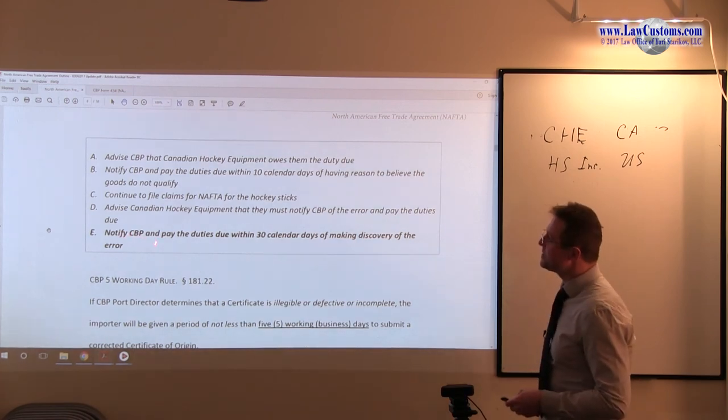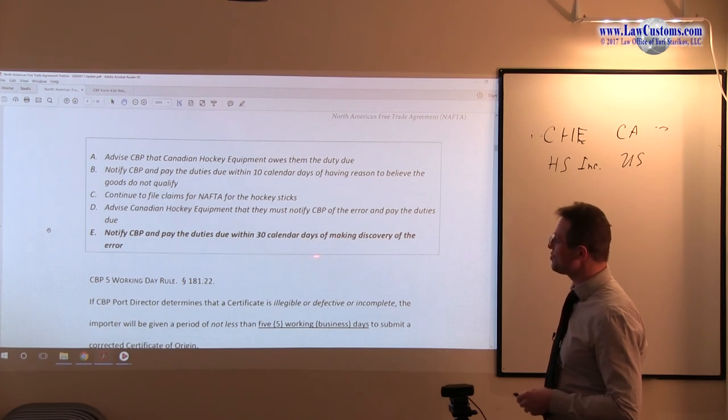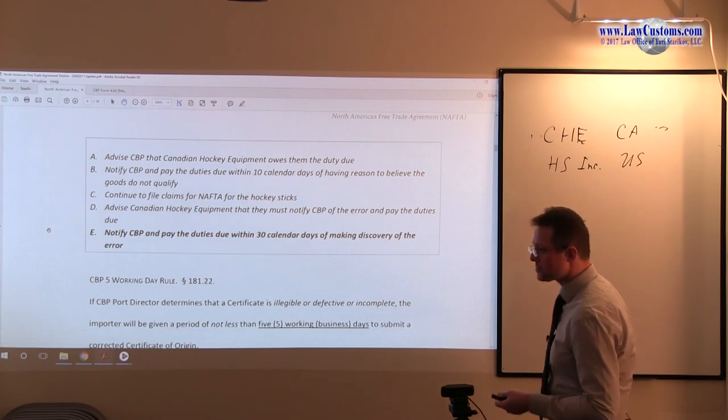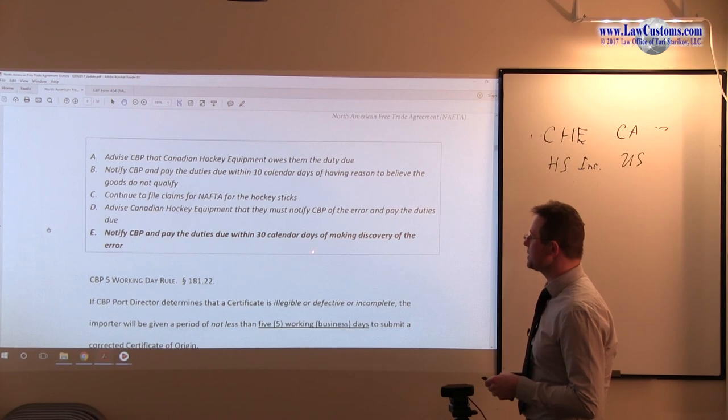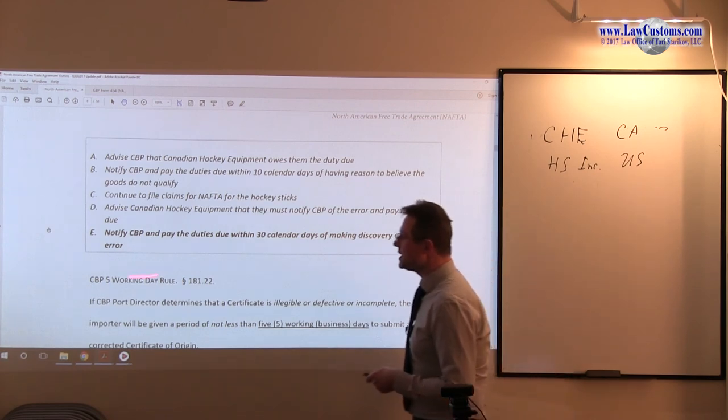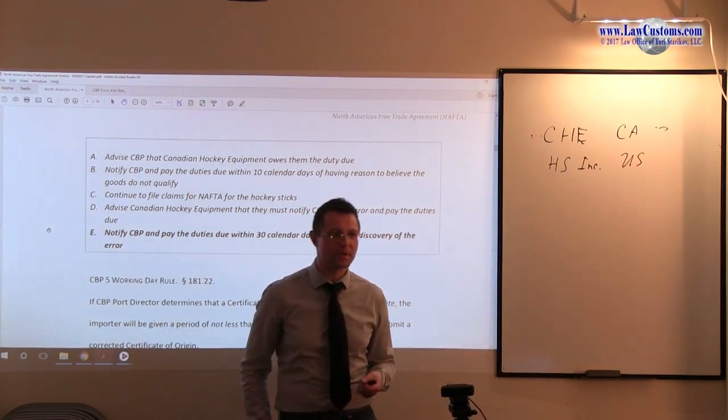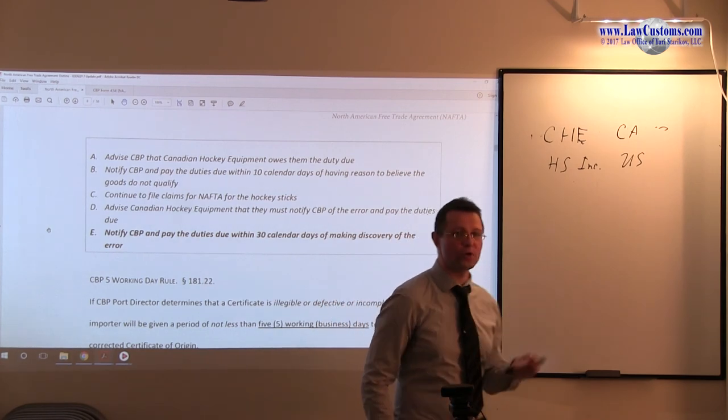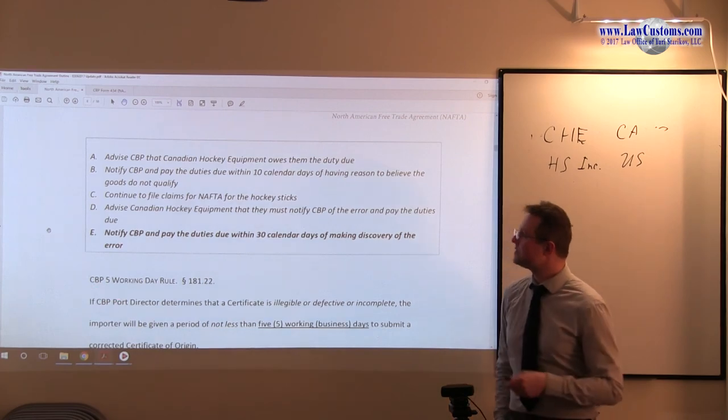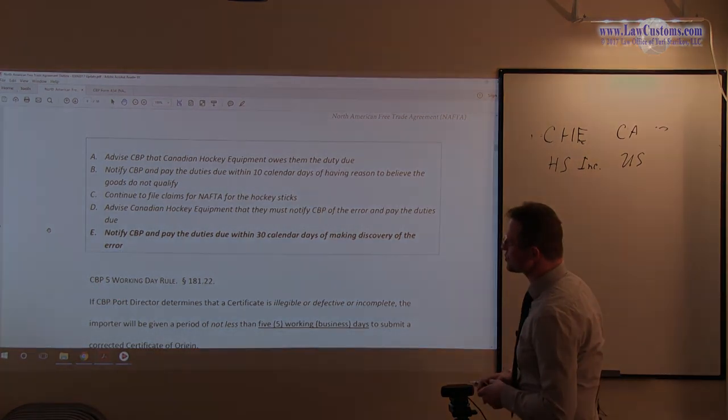E. Notify CBP and pay the duties due within 30 calendar days. We have the 30 calendar day rule, notify CBP rule, which is a responsibility of the importer of record. And the 30-day rule countdown starts from the day of making the discovery of the error. E fits the 30-day rule and fits the responsible party rule, which is the importer of record, which is hockey sticks incorporated. Making E a correct answer choice for this question.